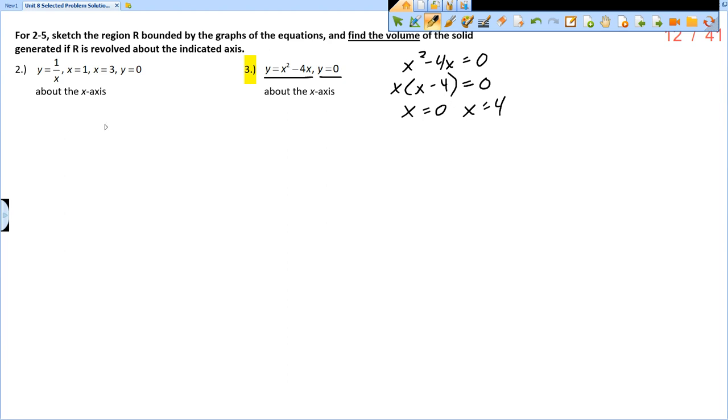So what does that really mean? That means I have a parabola facing upwards with zeros at zero and four. And so that graph and y equals zero create this region. And so now I want to revolve this region around the x axis.